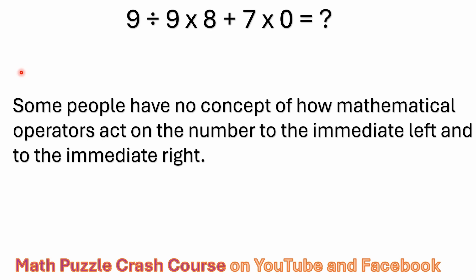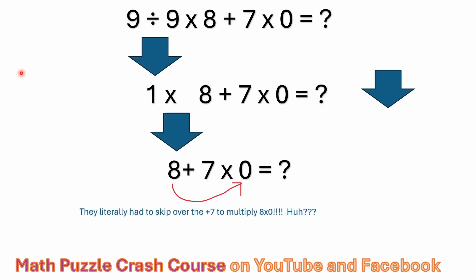The real truth of the matter is if you got seven, you're actually really struggling with the concept of mathematical operators and how they act on numbers. Something like division, multiplication, addition, subtraction, whatever operator sign you're looking at, they act on the number to the immediate left and the number to the immediate right. So I don't understand where people are getting this idea of swapping things around. I'm going to try my best to explain how people are coming up with seven. They're doing the nine divided by nine, getting one, which is good. One times eight, because you have this eight here, right? One times eight is eight. That's good.